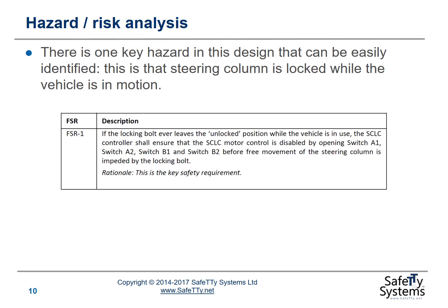There is one key hazard in this design: the steering column being locked while the vehicle is in motion. This gives us functional safety requirement 1 (FSR1): if the locking bolt ever leaves the unlocked position while the vehicle is in use, the steering column lock controller shall ensure that motor control is disabled by opening switches A1, A2, B1, and B2 before free movement of the steering column is impeded by the locking bolt. We need to detect that the locking bolt has moved and react before there is any risk that it can actually lock the vehicle while in use.